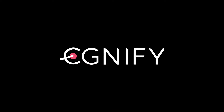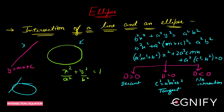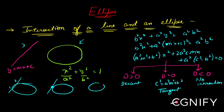Let us see the concept of intersection of a line and an ellipse — something very similar to what we have been doing for circles and parabolas. We have a straight line y = mx + c and a curve ellipse x²/a² + y²/b² = 1. There are three ways in which the line can intersect this curve: it can be a secant (intersecting in two points), a tangent (just touching), or a line which does not meet the ellipse at all.